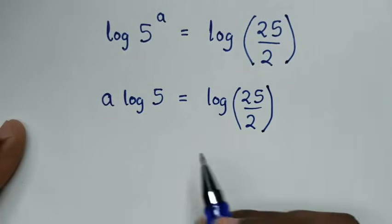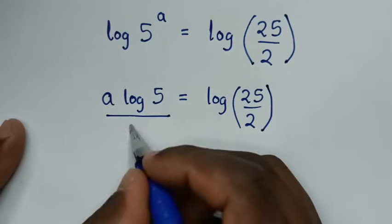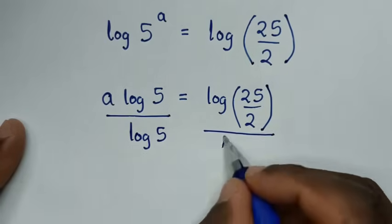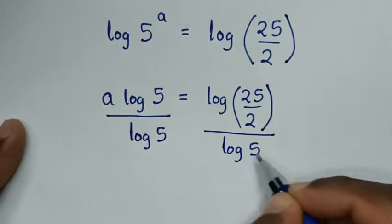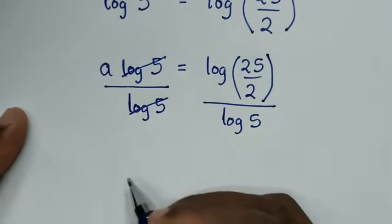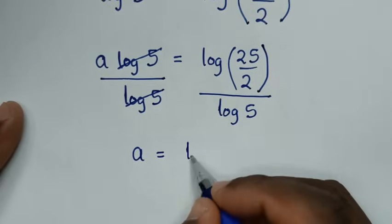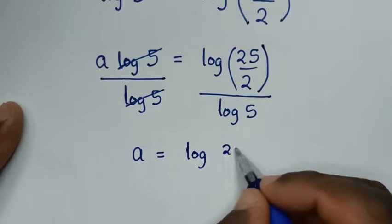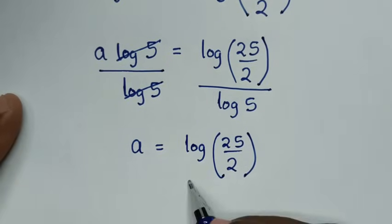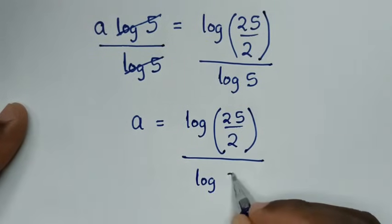In the next step we divide by log of 5 on both sides. Log of 5 and log of 5 will cancel, giving us a is equal to log of 25 over 2, all over log of 5.